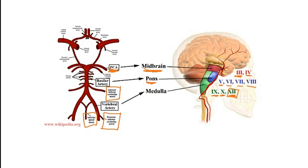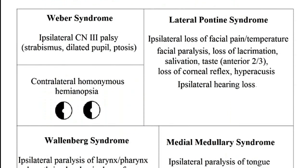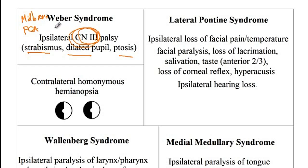Now let's go through those syndromes together. For Weber syndrome — if the exam just describes the presentations — the patient has strabismus, dilated pupils, and ptosis, indicating ipsilateral cranial nerve 3 palsy. Since the nucleus of cranial nerve 3 is located in the midbrain, and the midbrain is supplied by the posterior cerebral artery, there is a problem with the posterior cerebral artery causing midbrain defects. For this reason, another name for Weber syndrome is medial midbrain syndrome.